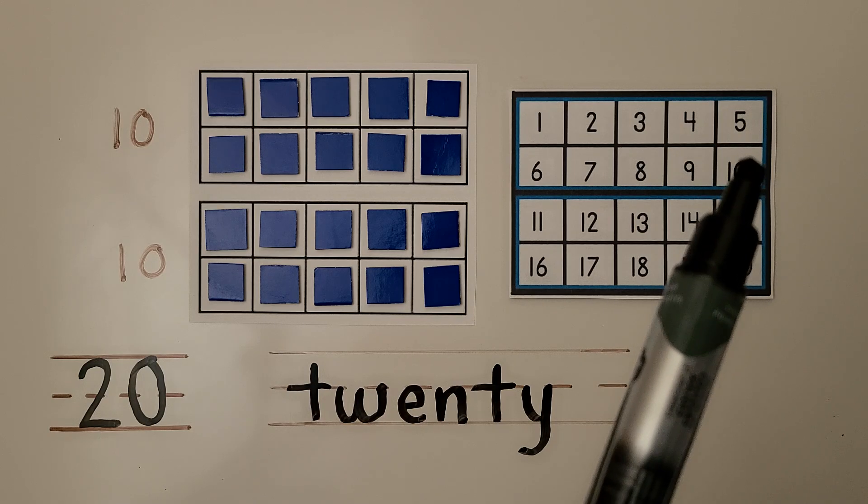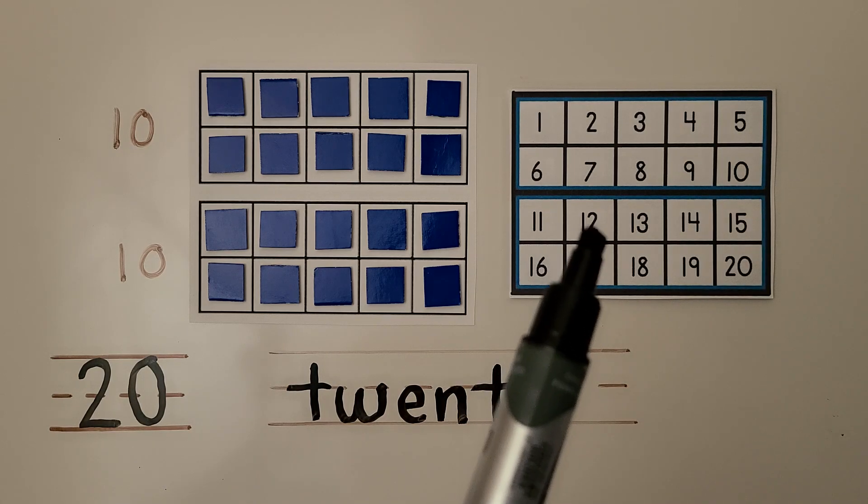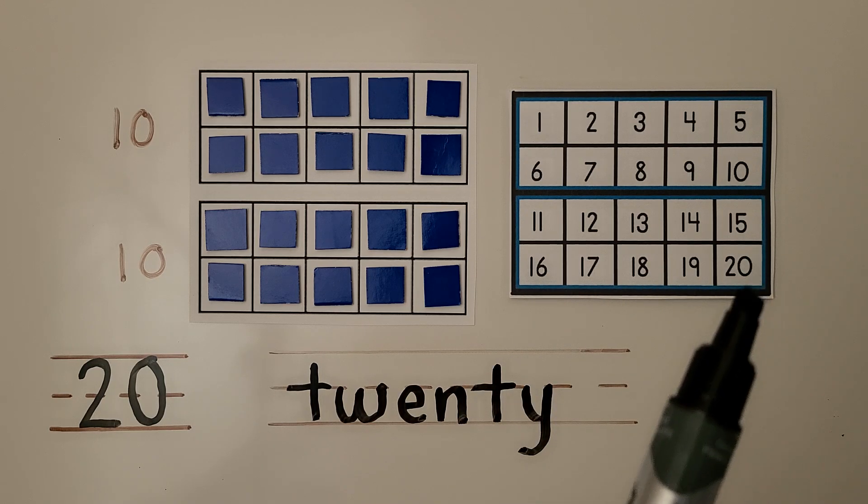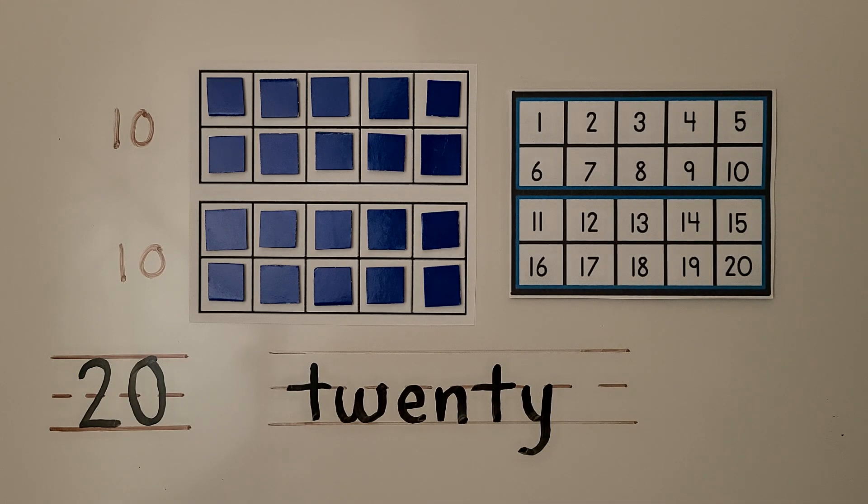There's 10 in the first ten frame, then 11, 12, 13, 14, 15, 16, 17, 18, 19, 20 for two ten frames that are full.